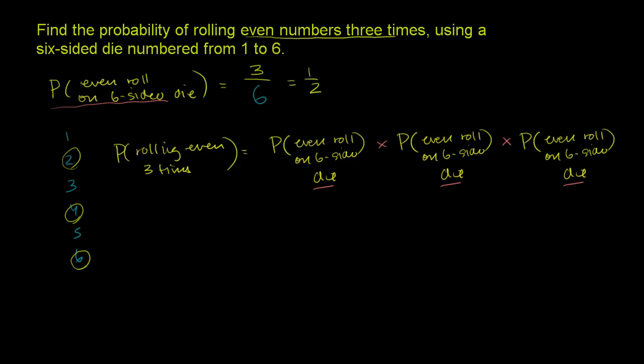They're independent events. So this is going to be equal to 1 half times 1 half times 1 half, which is equal to 1 over 8. There's a 1 in 8 possibility that you roll even numbers on all three rolls.